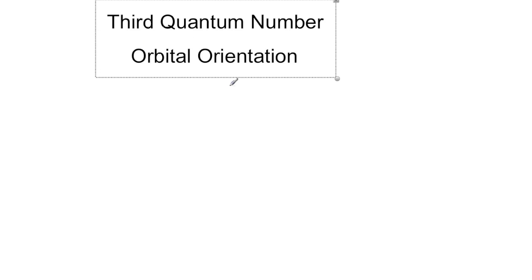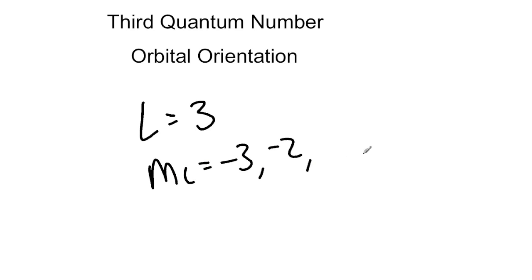For the third quantum number for L equals 3, you're going to have ML equals minus 3, minus 2, minus 1, 0, plus 1, plus 2, and plus 3. For the F, we do not expect you to know the orbital shapes as there are seven different orbitals possible for the F's.